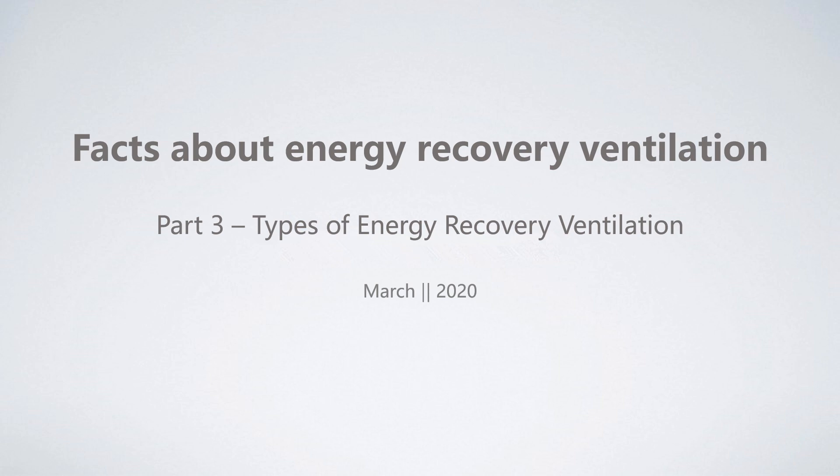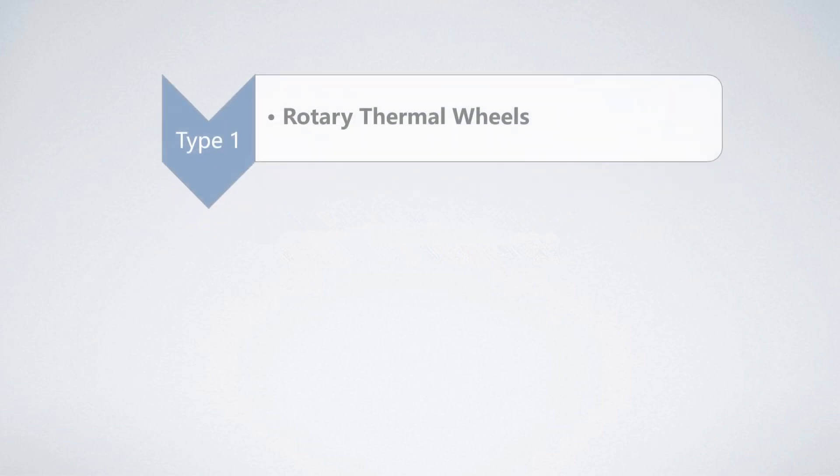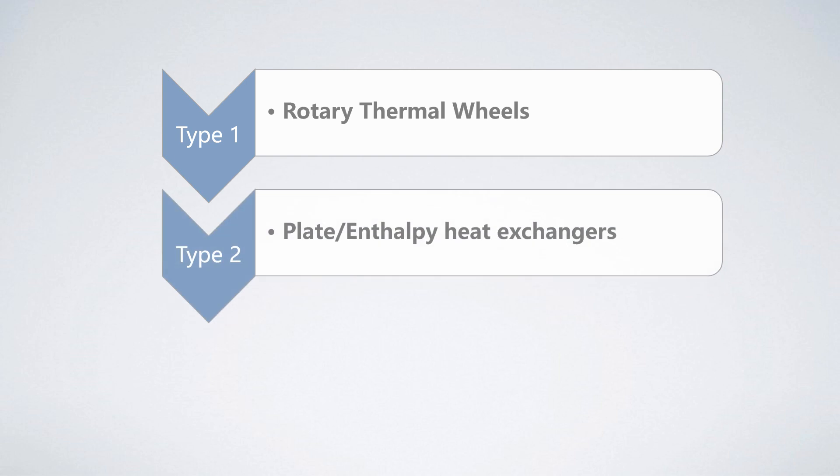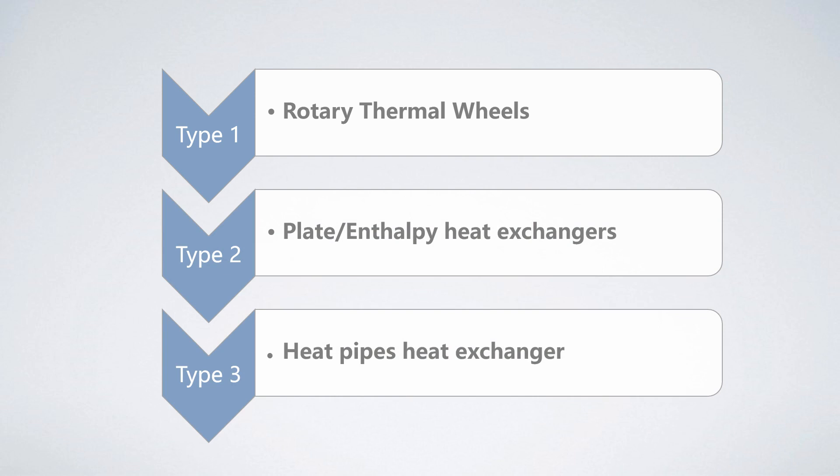All involve some form of heat exchanger. The first type is rotary thermowheels. The second type is plate or enthalpy heat exchangers. The third type is heat pipe heat exchangers. Today we will only talk about these three types.